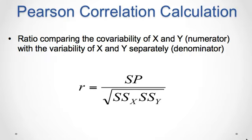The Pearson correlation consists of a ratio comparing the co-variability of X and Y in the numerator with the variability of X and Y separately in the denominator. In the formula for the Pearson R, we use sum of products to measure the co-variability of X and Y. The variability of X is measured by calculating sum of squares for the X scores, and the variability of Y is measured by sum of squares for the Y scores. So R is equal to sum of products divided by the square root of sum of squares for X times sum of squares for Y.